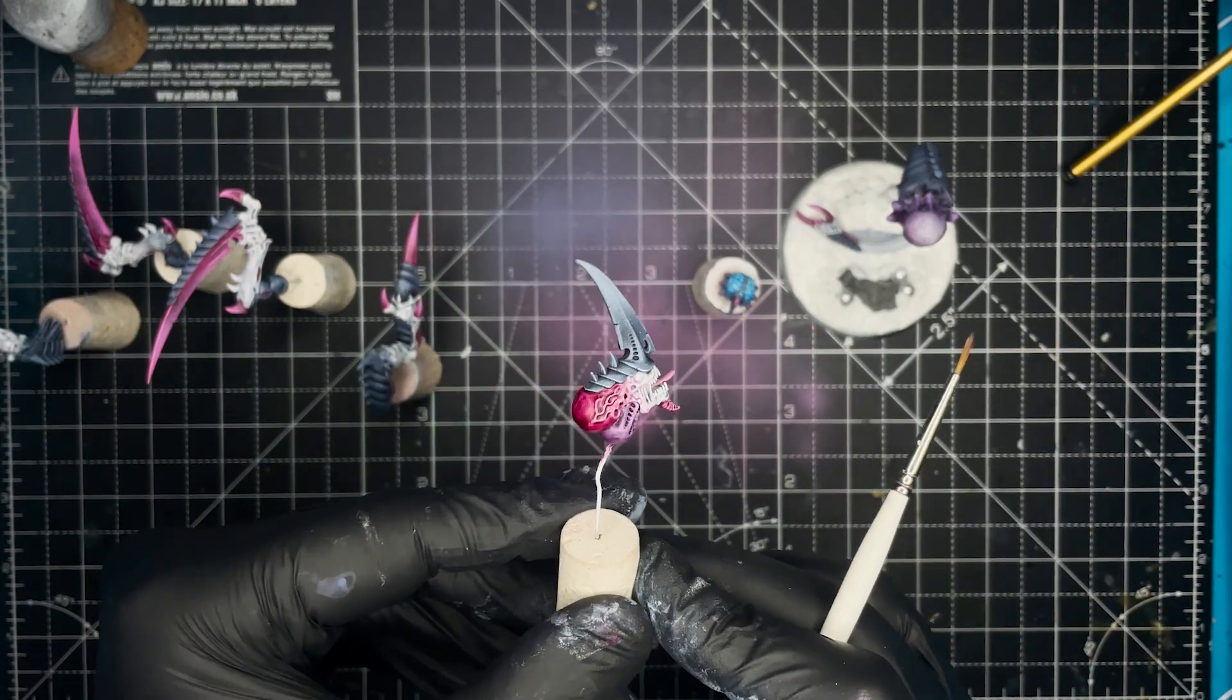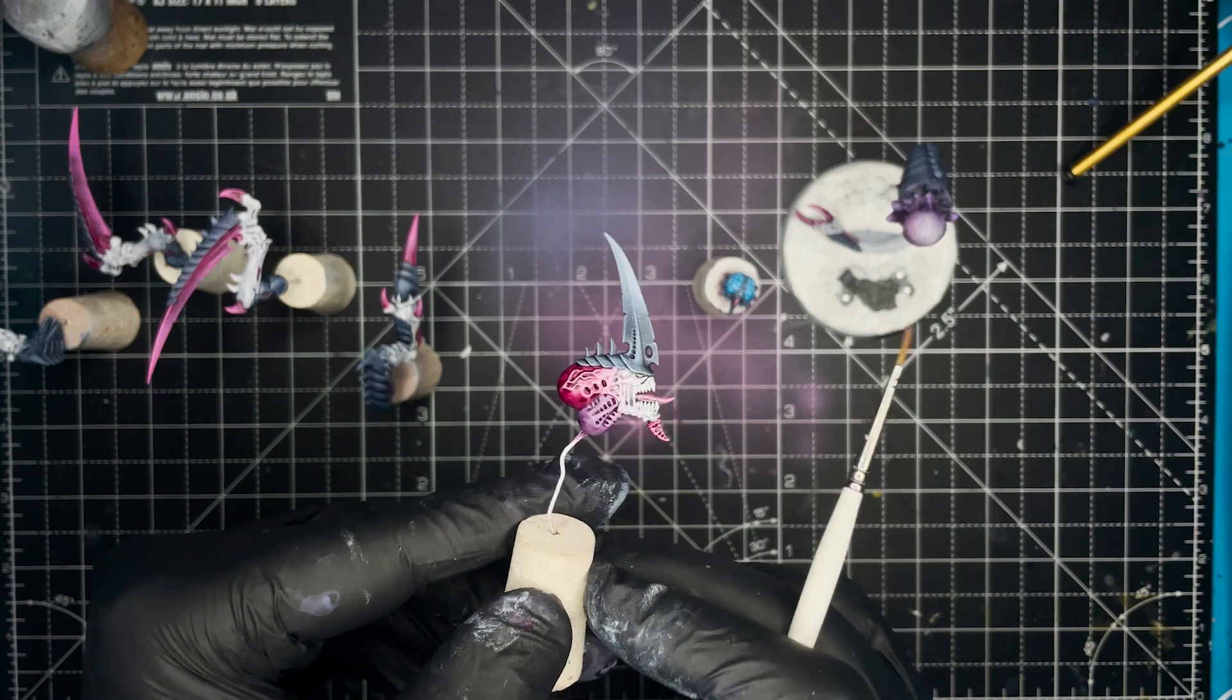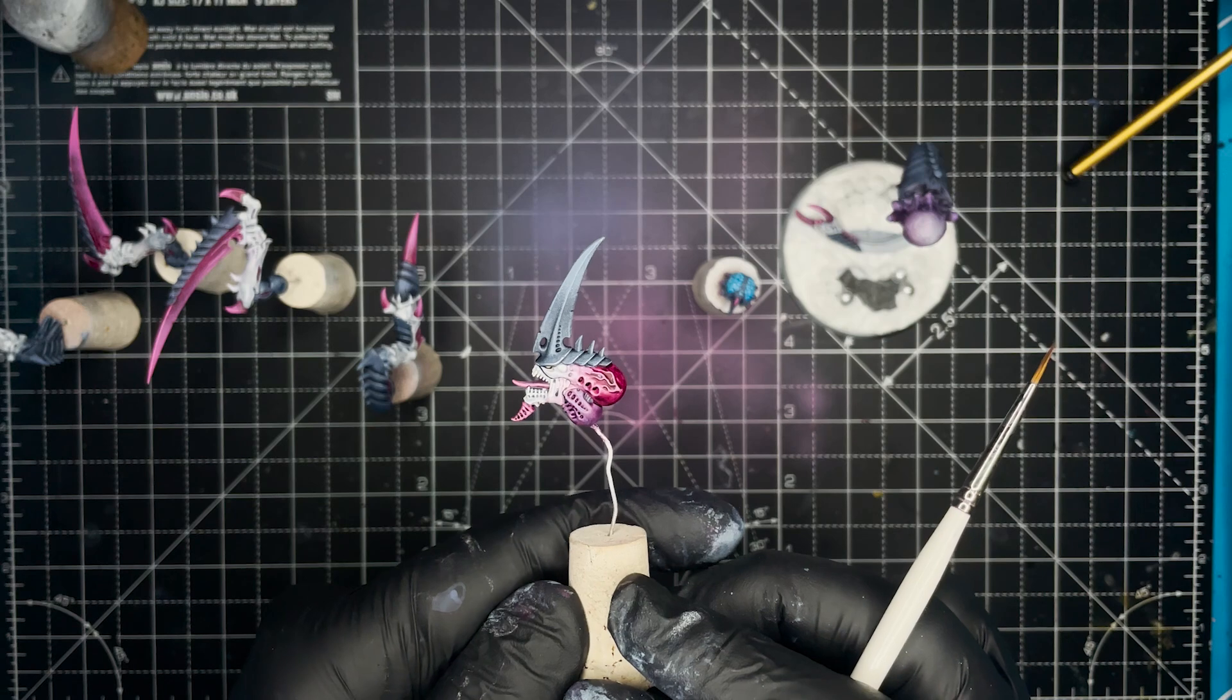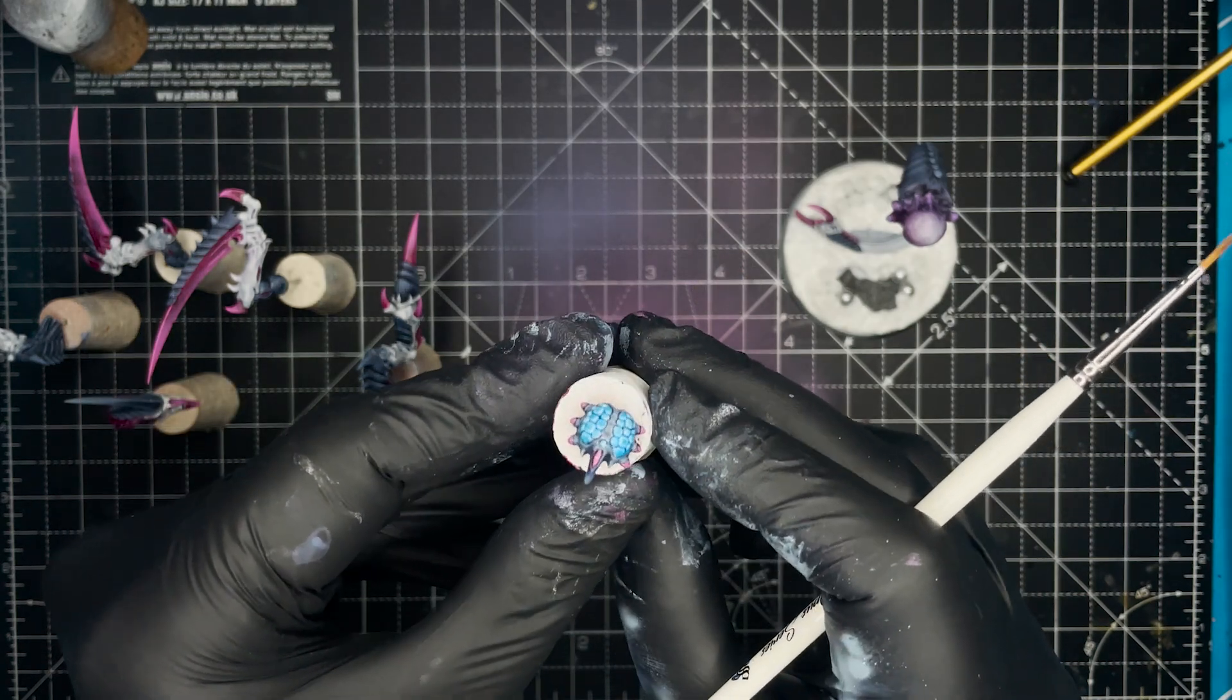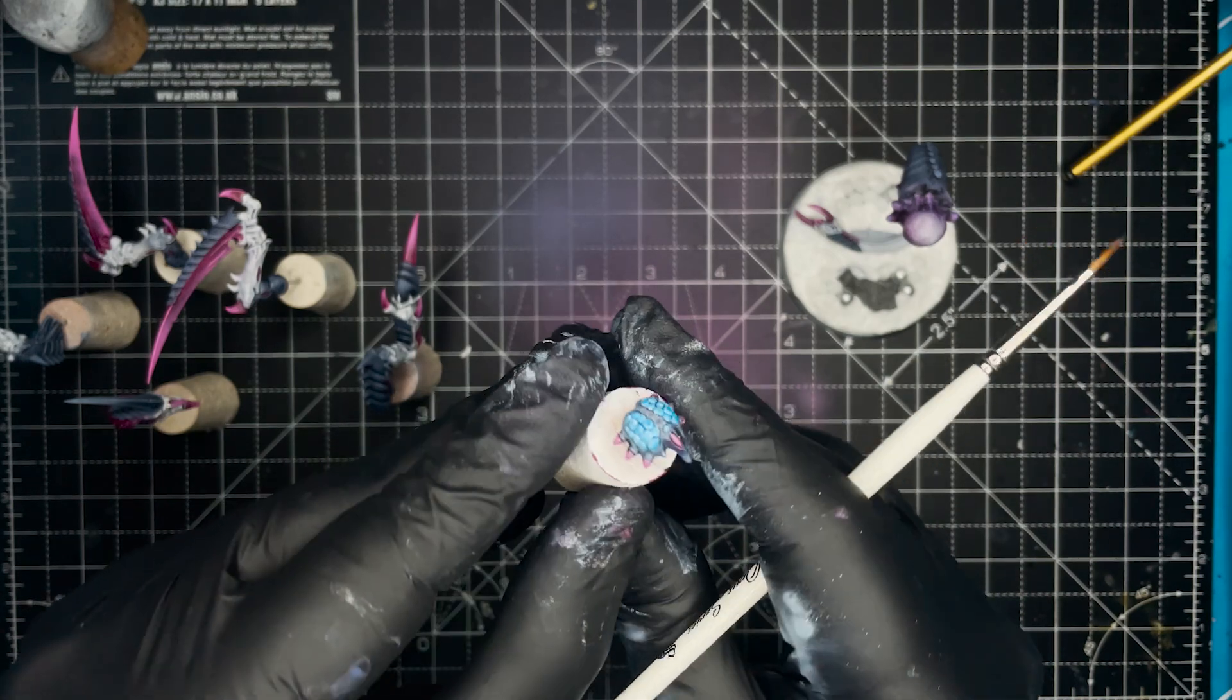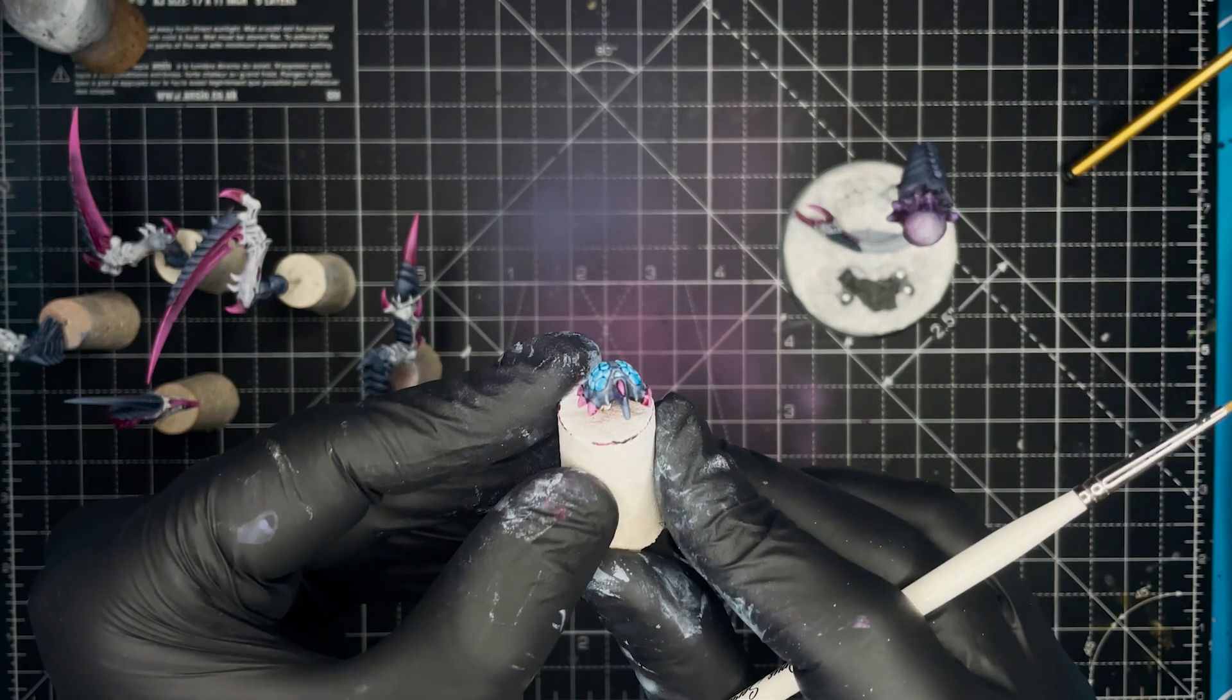I then used the same Volupus Pink to feather in the back part of the head as well. And for the brain I used Vallejo Express Mystic Blue.